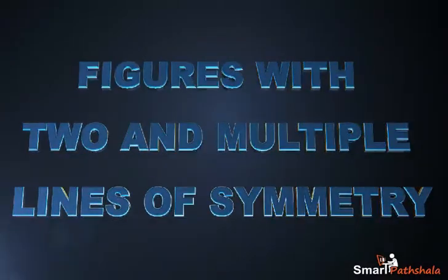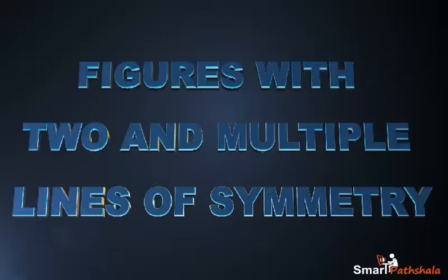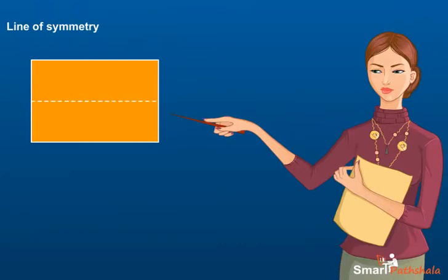Figures with Two and Multiple Lines of Symmetry. This module will give an introduction to figures with two and multiple lines of symmetry. A line of symmetry is a line that divides a figure into two congruent parts, each of which is the mirror image of the other.